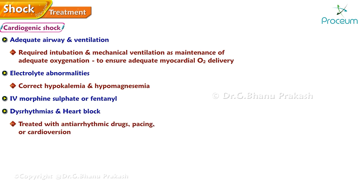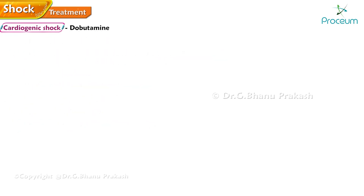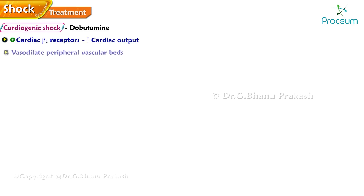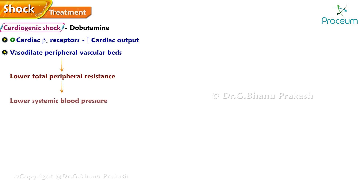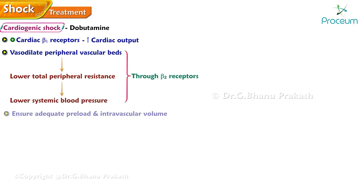Arrhythmias and heart block must be treated with antiarrhythmic drugs, pacing, or cardioversion if necessary. Dobutamine stimulates cardiac beta-1 receptors to increase cardiac output but may also vasodilate peripheral vascular beds, lower total peripheral resistance, and lower systemic blood pressure through beta-2 receptors. Ensure adequate preload and intravascular volume before starting dobutamine.